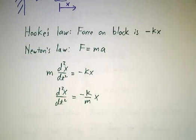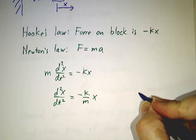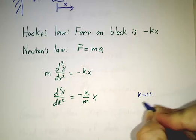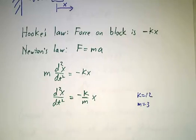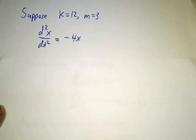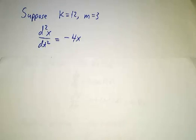So let's check out some numbers. What happens if k is 12 and m equals 3? In that case, k over m is 4, so we wind up with the equation: the second derivative is minus 4 times x.